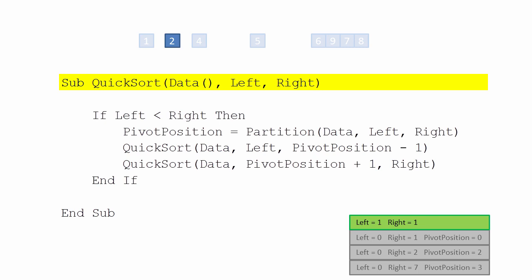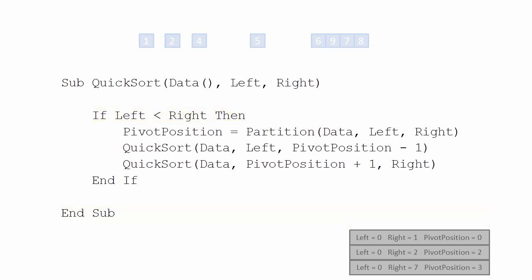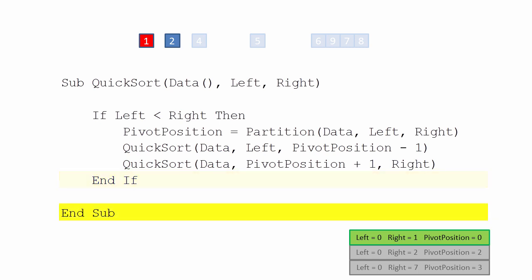With a sublist of only one item to process, the left pointer is not smaller than the right, so this invocation swiftly comes to an end. The third invocation is back in control again. It has dealt with any sublists on either side of the pivot, and it can now finish without further interruption.